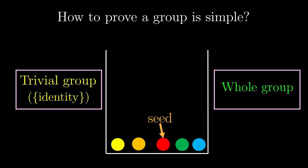The catch here is that we use this red symmetry as a seed, and the argument might be completely different if we use some other symmetries as a seed instead. So we need to try out all different seeds to really prove a group is simple.